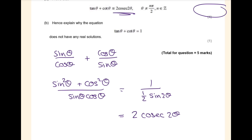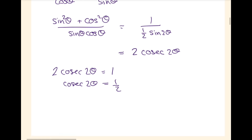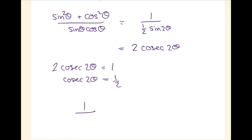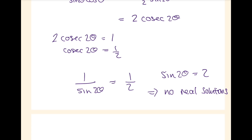Hence explain why the equation equals 1 does not have any real solutions. 2 cosec(2θ) = 1 means cosec(2θ) = ½, which means 1/sin(2θ) = ½, so sin(2θ) = 2. This does not exist, as sin must be between -1 and 1. Therefore, no real solutions.